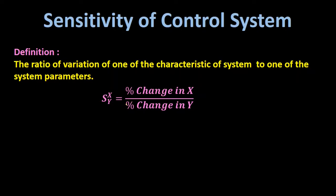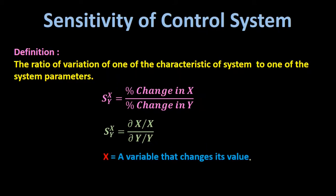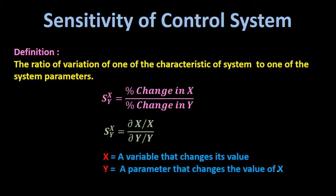The sensitivity of a control system is represented by S_xy, which equals percentage change in x divided by percentage change in y. The percentage change in x can be written as Δx/x and percentage change in y as Δy/y. Therefore, sensitivity equals (Δx/x) divided by (Δy/y), where x is the characteristic of the system and y is the parameter of the system.